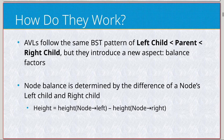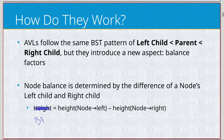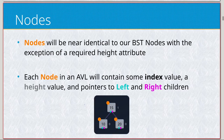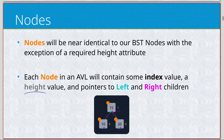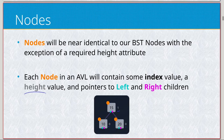Now we include that all nodes have a height, and there is a balance factor to each node. Node balance is determined by the difference of a node's left child and right child's height. The balance factor is: height of the node's left child minus the height of the node's right child. Looking at the nodes — nearly identical to our BST nodes — we have the data value, pointers to left and right child, but now they also have height values. Leaf nodes like 10 and 20 have a height of zero; the root (15 here) has a height of one.